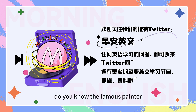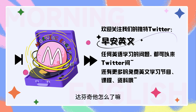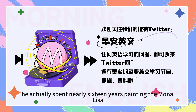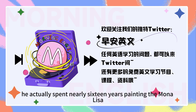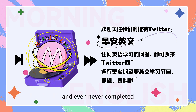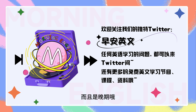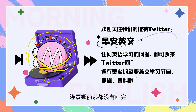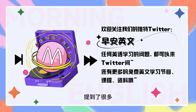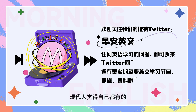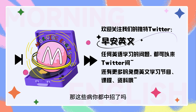Do you know the famous painter Leonardo da Vinci? Yeah, 达芬奇，他怎么了吗？He actually spent nearly 16 years painting the Mona Lisa, and even never completed it. 所以说达芬奇有拖延症啊，而且是晚期哦，连蒙娜丽莎都没有画完。Alright，所以我们今天提到了很多现代人觉得自己都有的各种奇怪的病，这些病你都中招了吗？